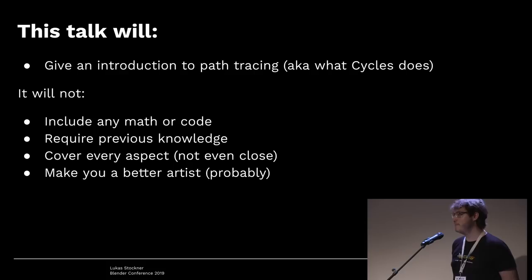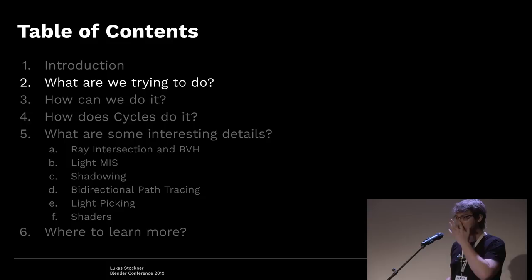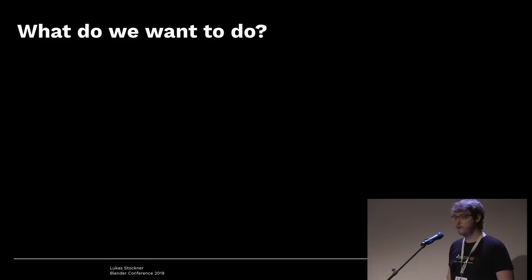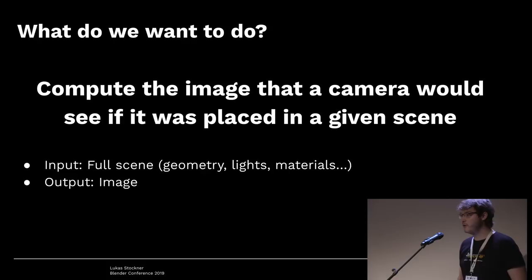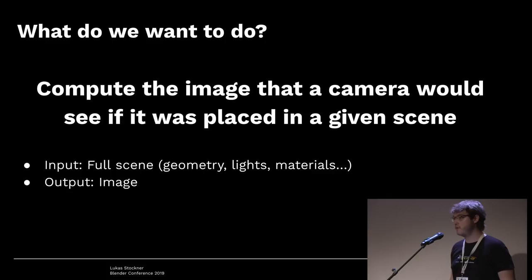Before we develop solutions we need to know the problem. What we want to do is compute the image that a camera would see if it was placed in a given scene in the real world. The renderer receives the full scene including geometry, where the lights are, which materials there are, and so on. The renderer doesn't care about armatures or modifiers — as far as it's concerned the geometry is done. The output is an image.